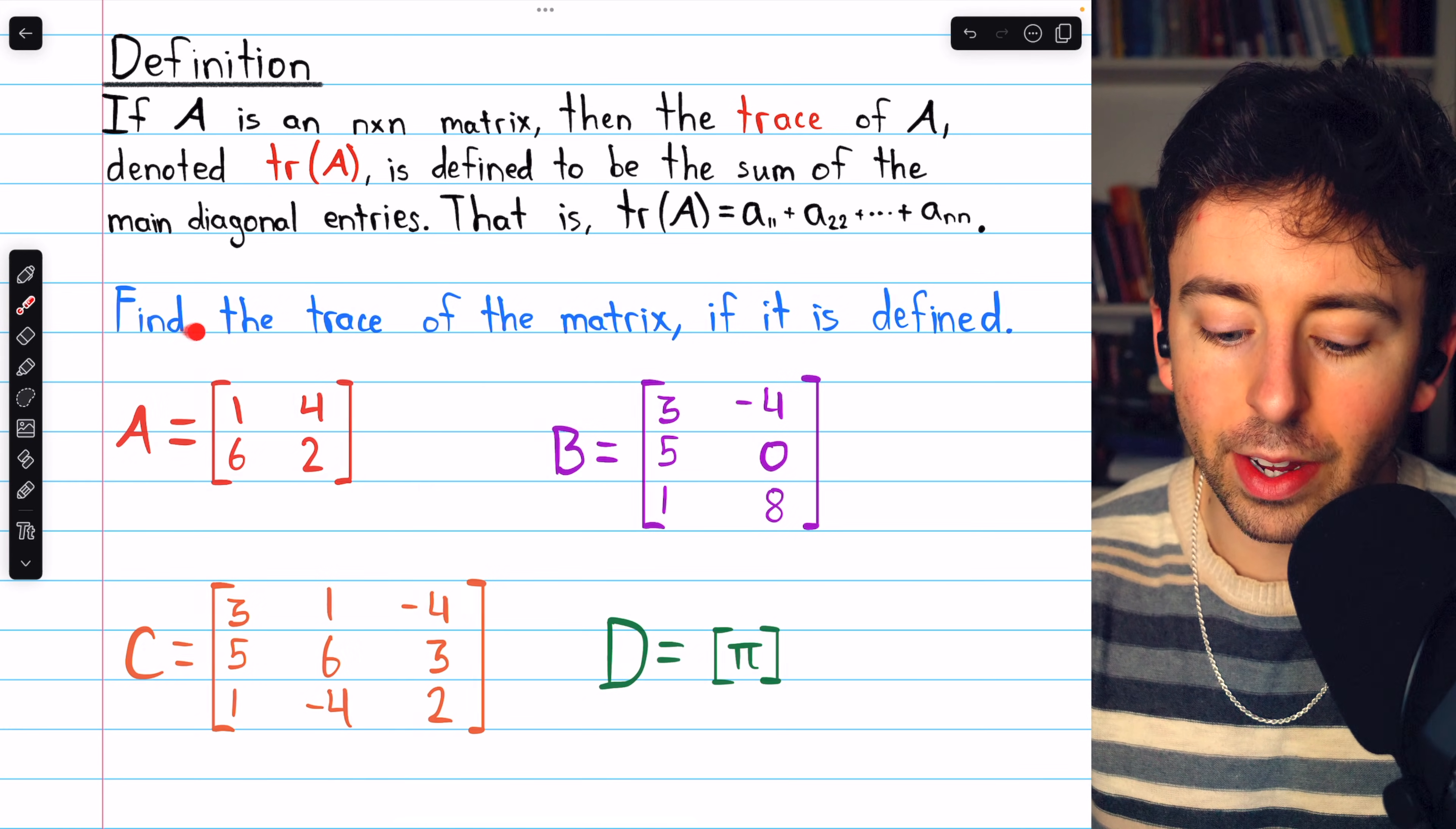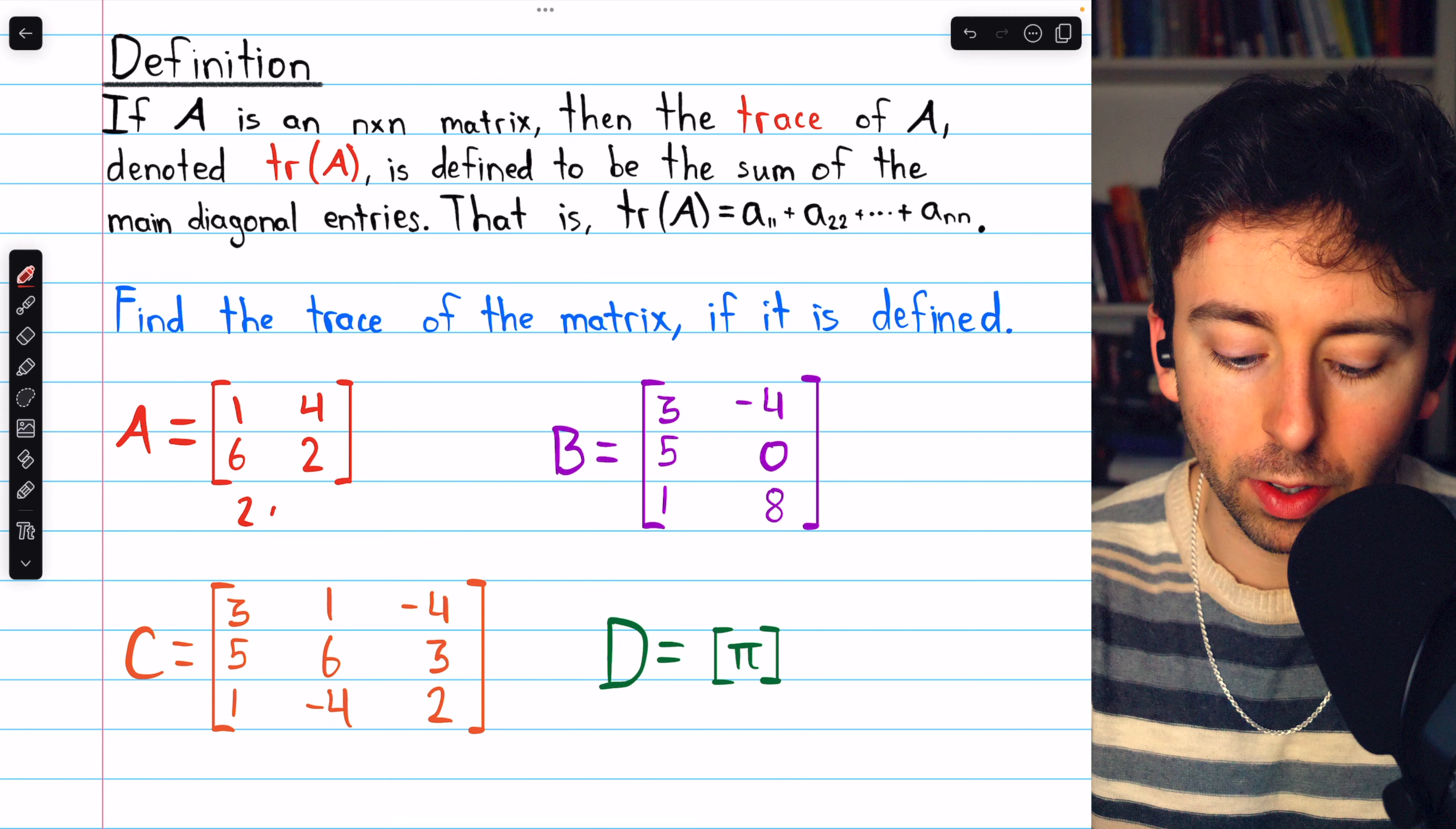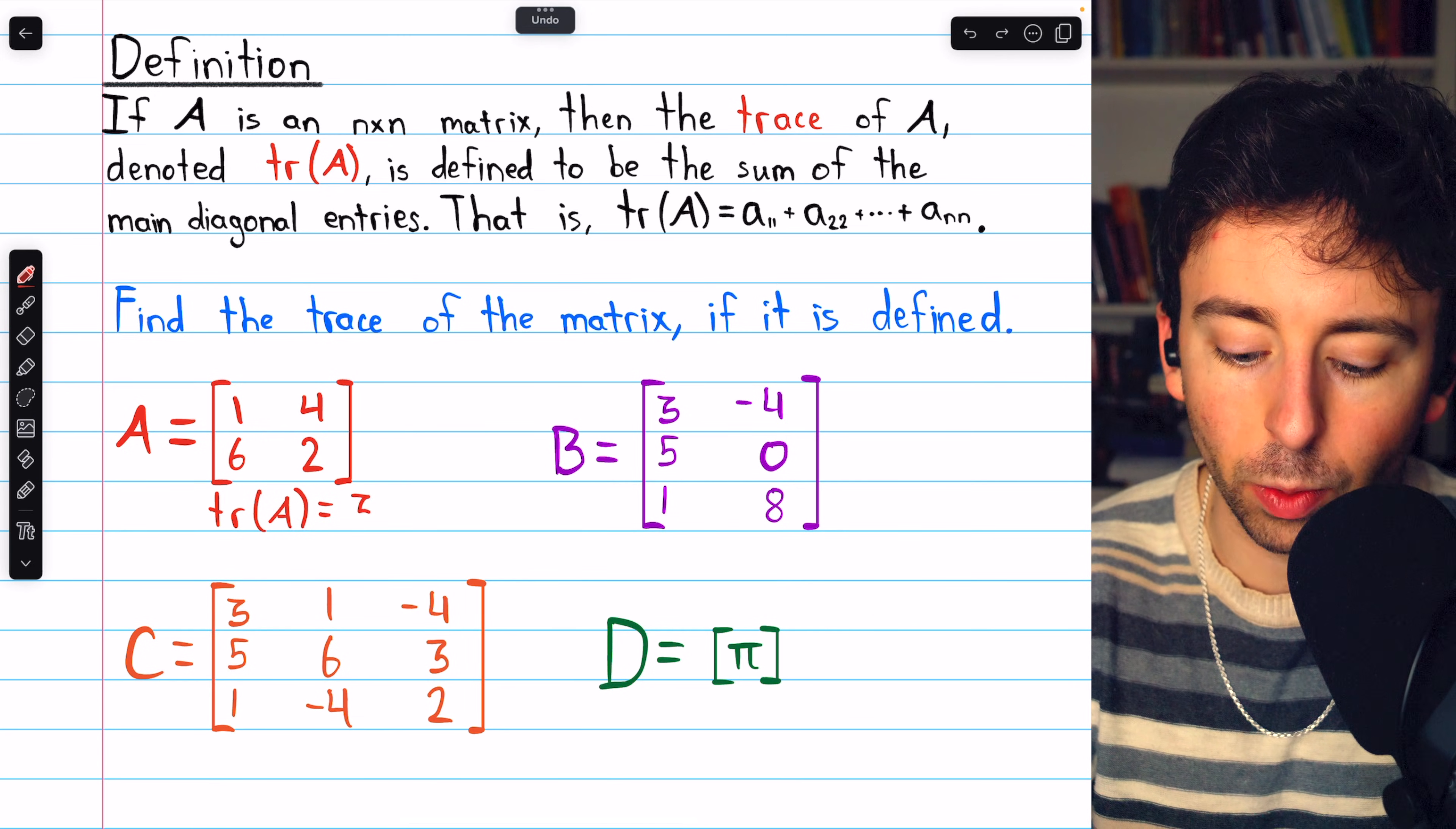Let's see some quick examples. Let's find the trace of each matrix if it is defined. Beginning with matrix A, is the trace of A defined? Yes, because matrix A is 2 by 2. It's a square matrix, so its trace is defined, and it's the sum of its diagonal entries, so 1 plus 2. The trace of A then equals 3.